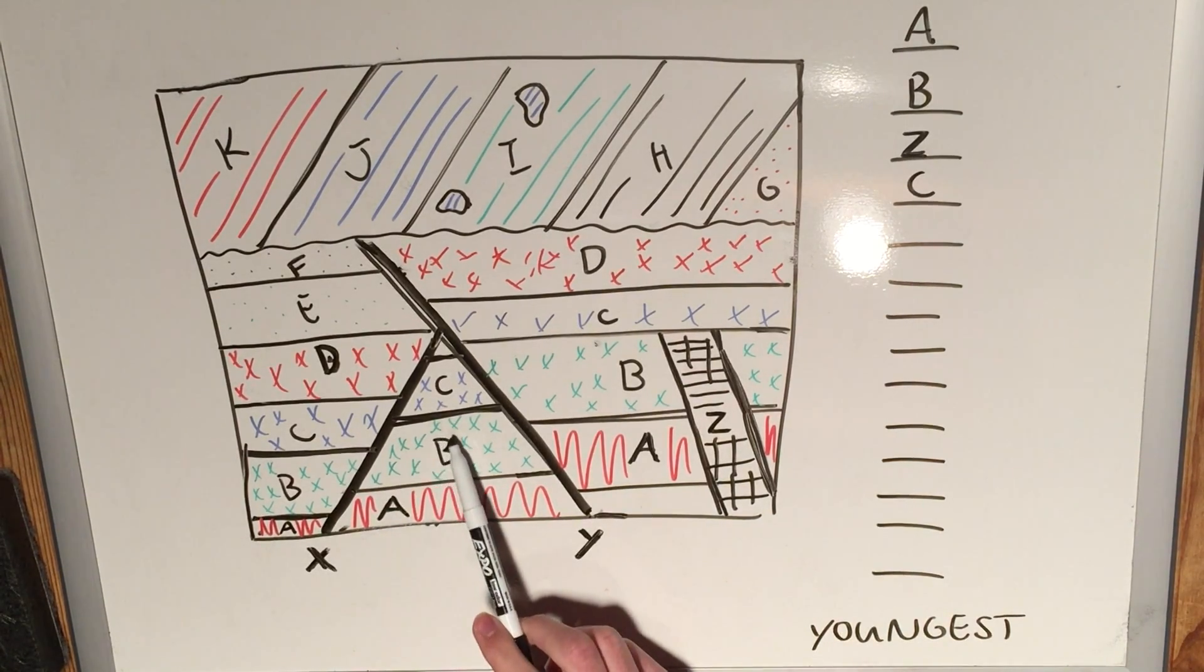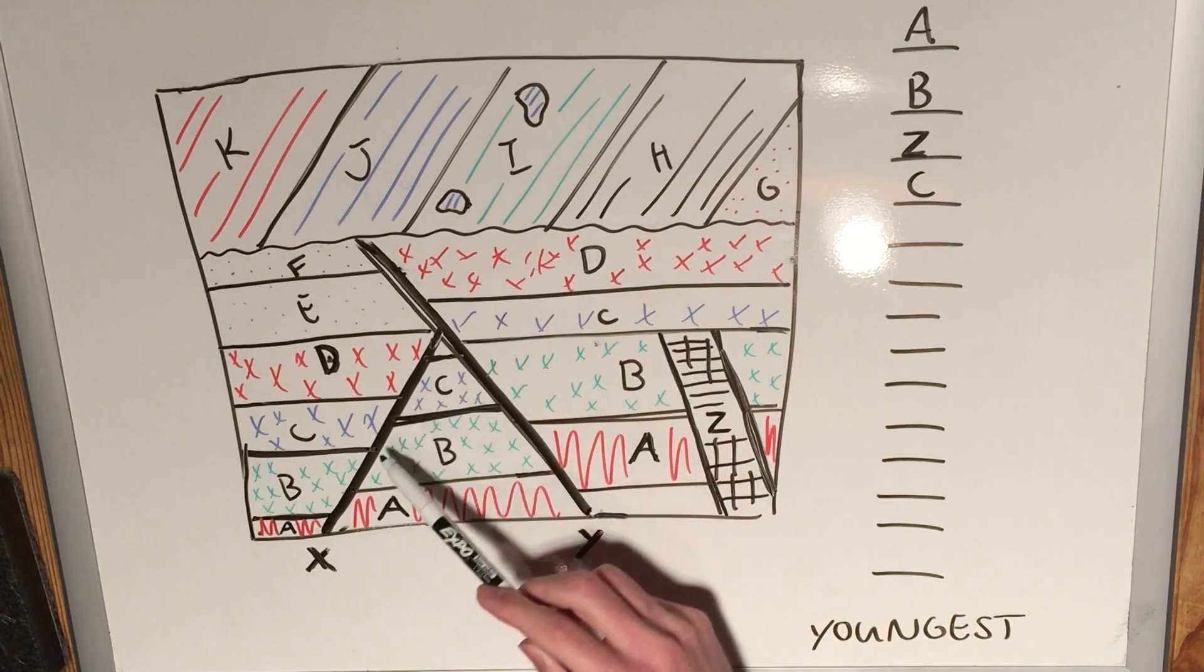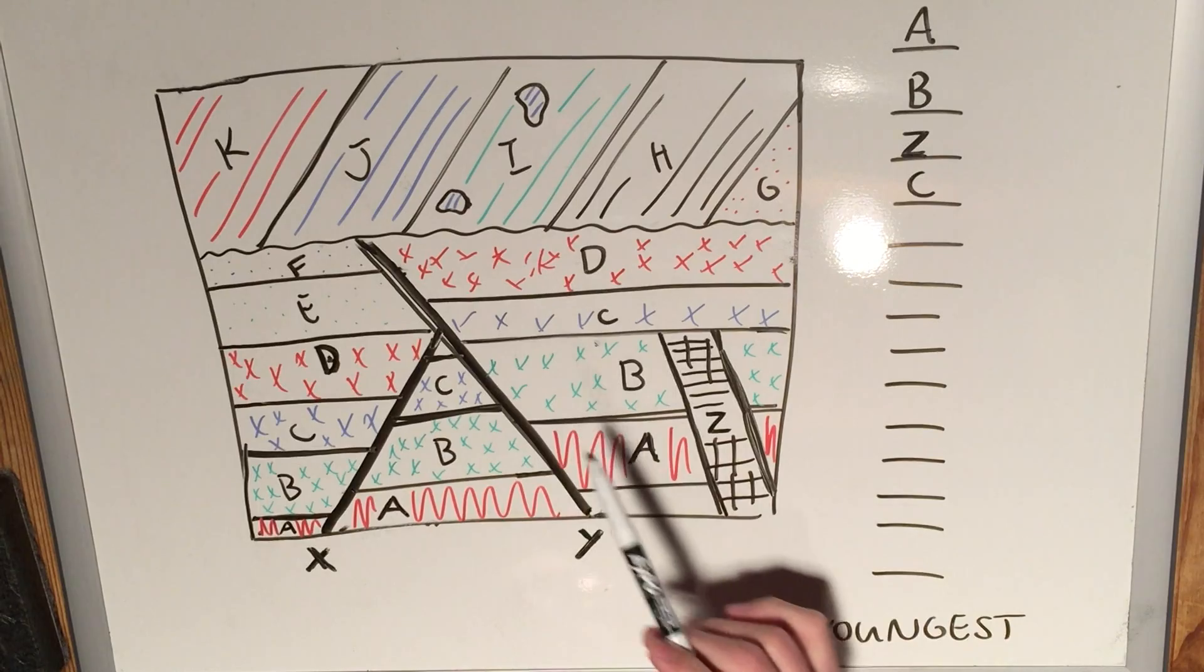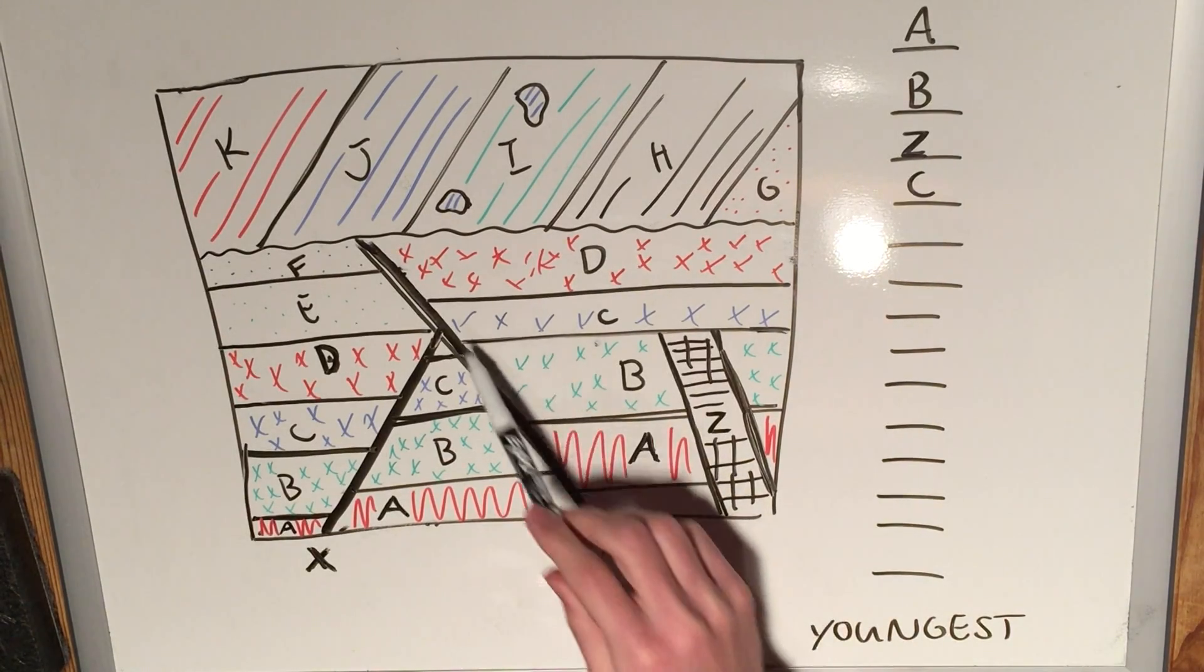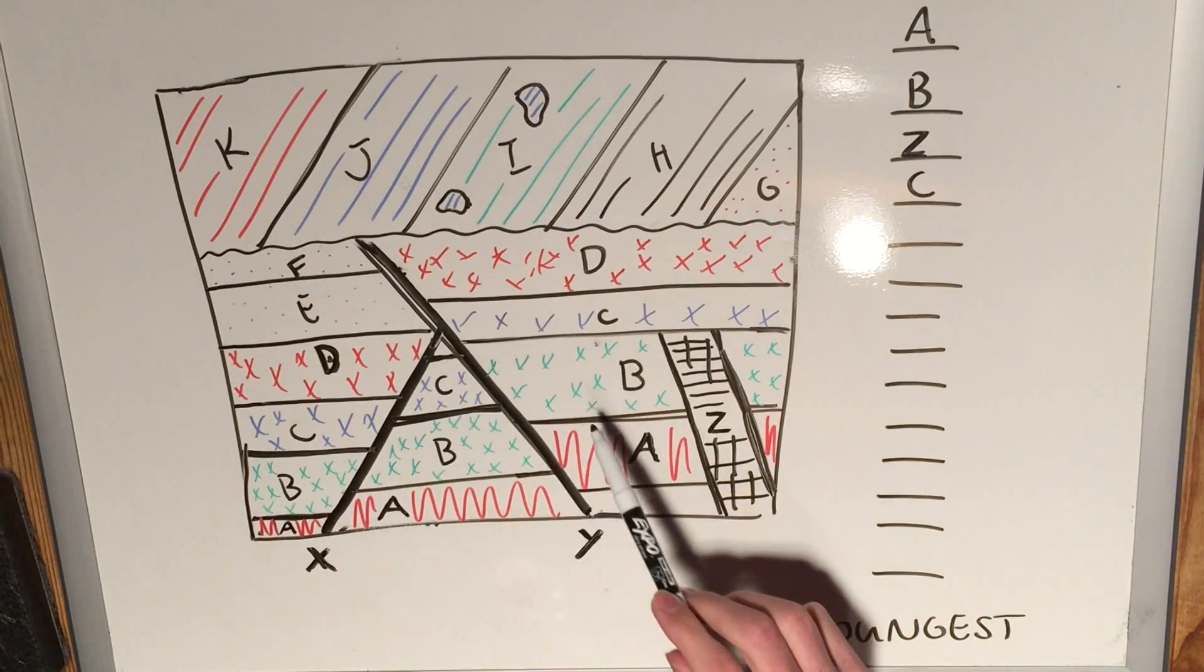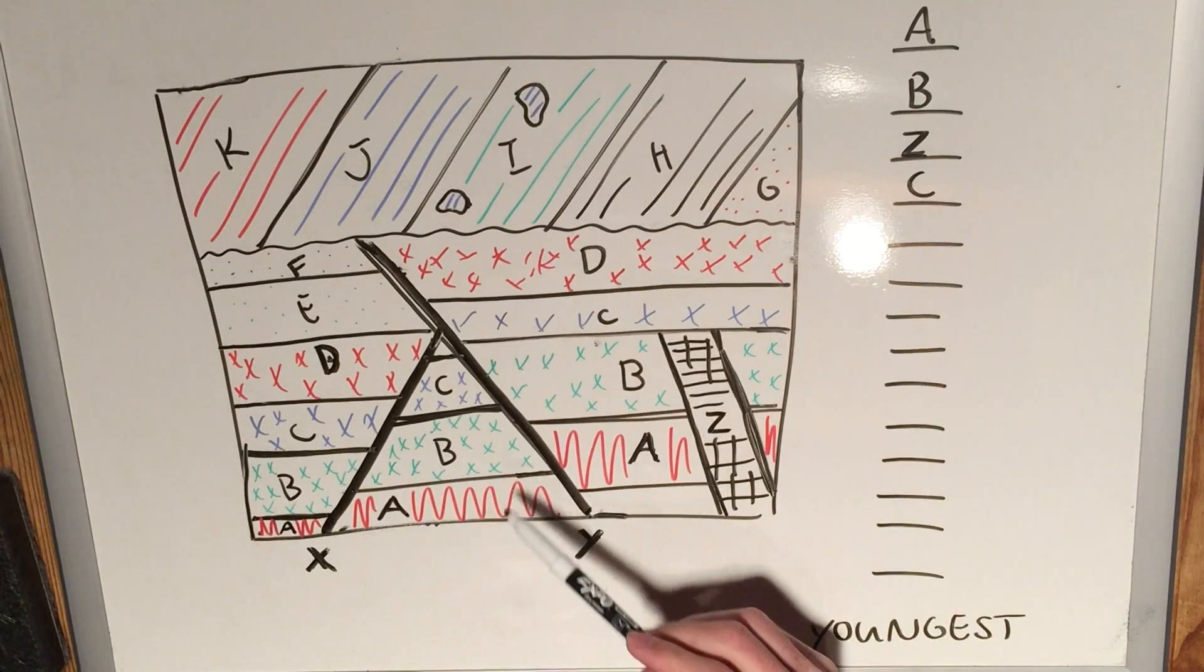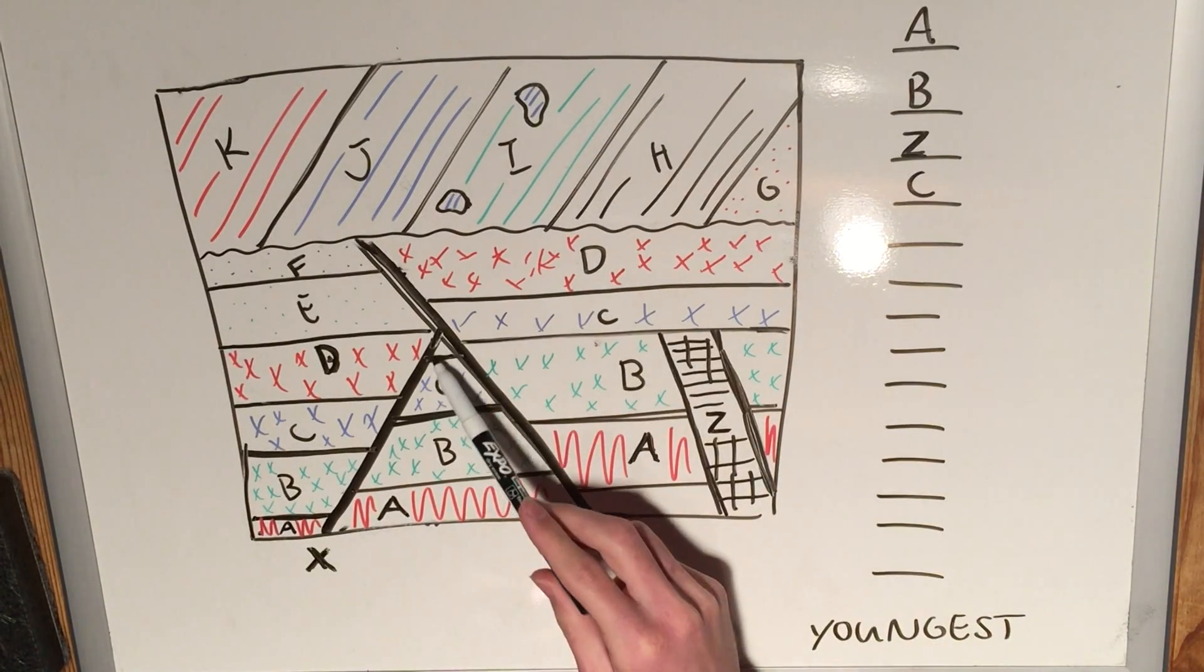This fault, X right here, appears to be a normal fault because the footwall has been upthrown. See, C here is higher than C here. B here is higher than B here. And then Y appears to be a reverse fault because the hanging wall, this piece, appears to be upthrown, or the footwall has been downthrown. Footwall downthrown—reverse FDR.